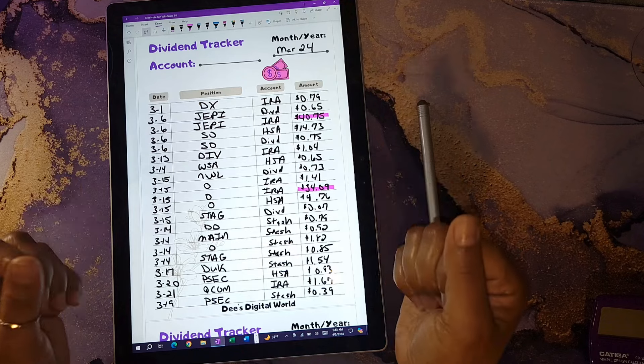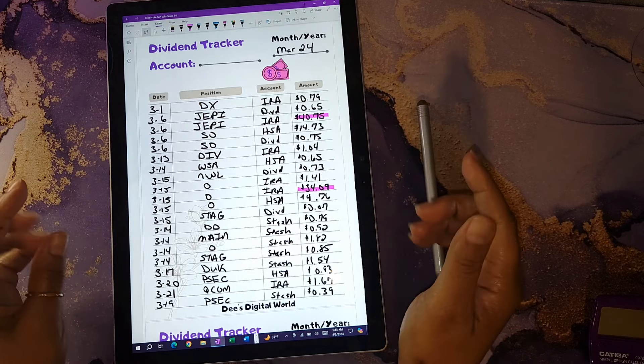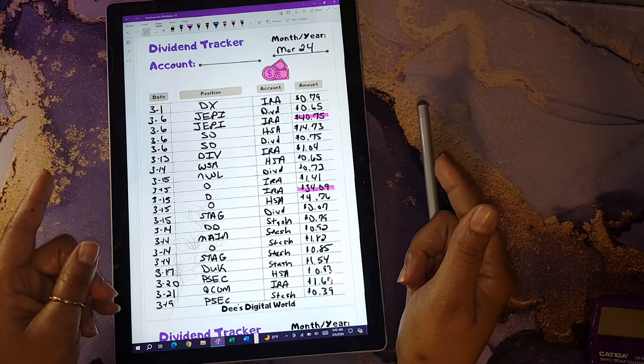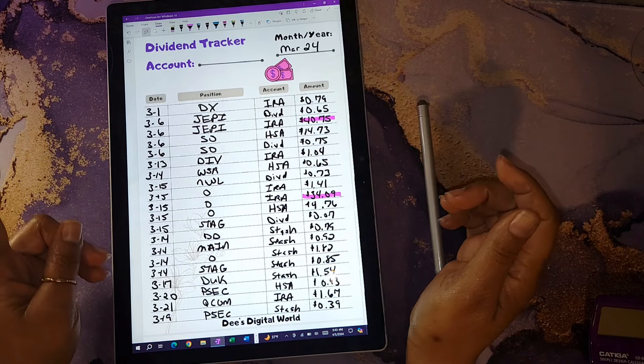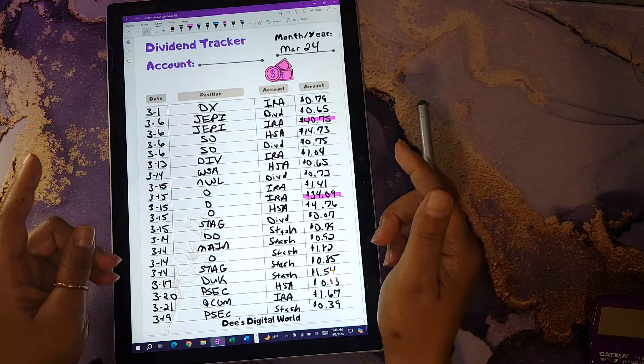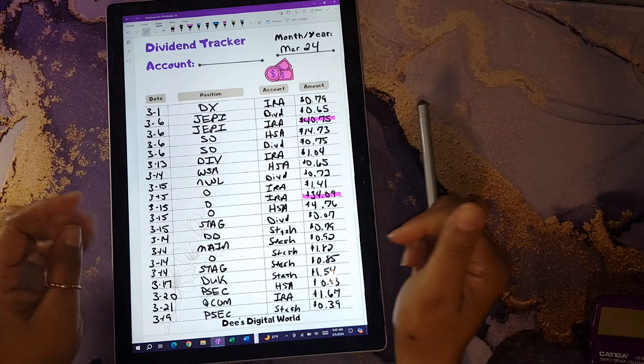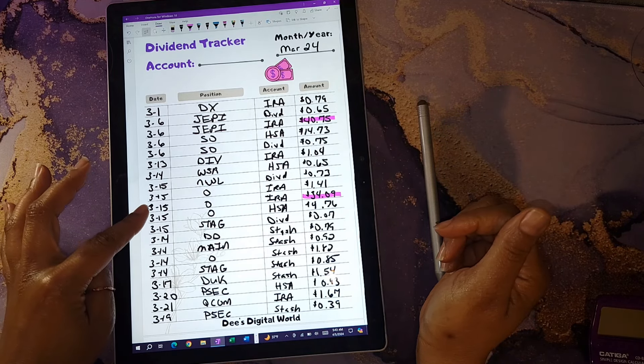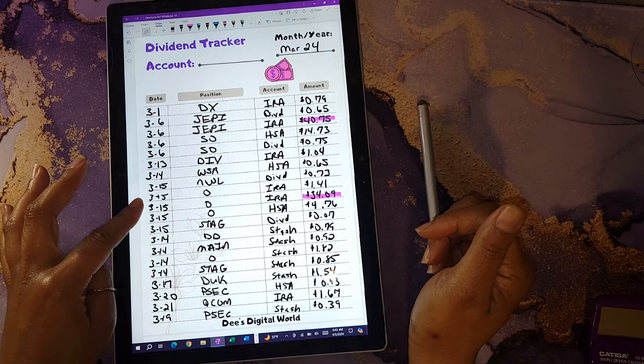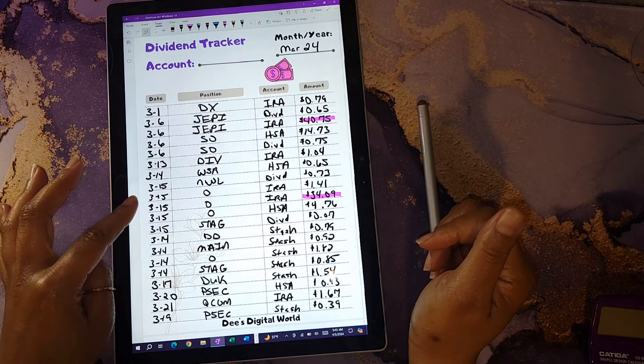I do have my investments within Fidelity and Stash currently, and those are just two platforms that I choose to use. The first big dividend I received in early March was from Jappy, and I got a total of $40.75 from them. The next one that I received was from O, and I got a total of $34.09 from them.